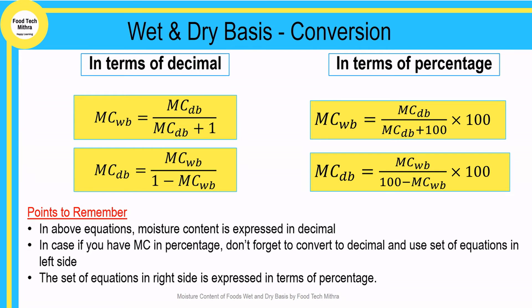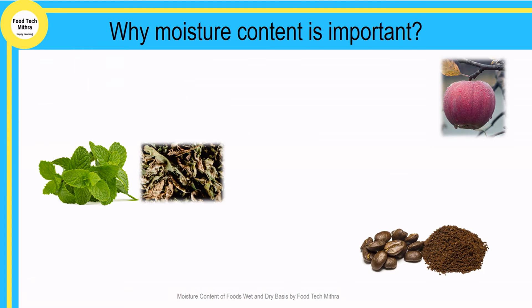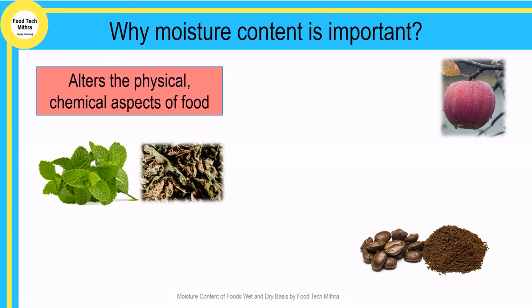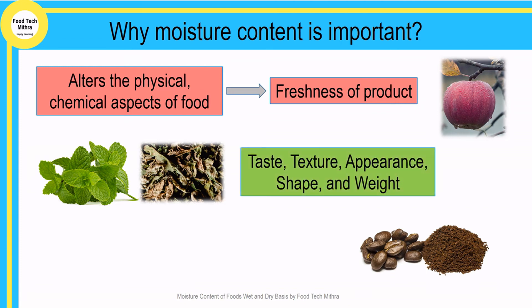Do you know why moisture content is important in food processing and preservation? The major reasons are: food quality, microbial stability, shelf life of food products, economic importance, and legal and labeling requirements. The moisture content of any food product affects the physical and chemical aspects of the food, relating to freshness. It has a direct impact on product quality such as taste, texture, appearance, shape, and weight.